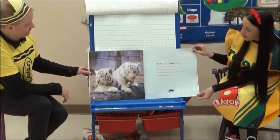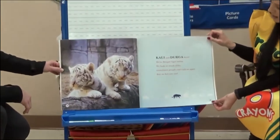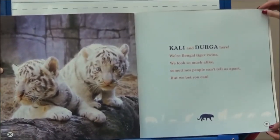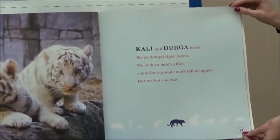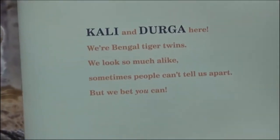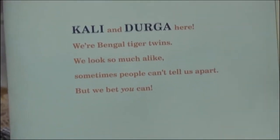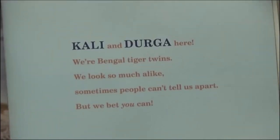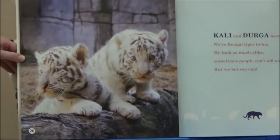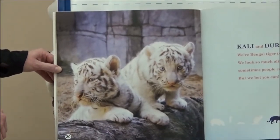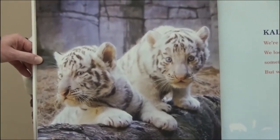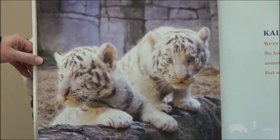Callie and Durga here — we're Bengal tiger twins. We look so much alike, our vocabulary word. Sometimes people can't tell us apart, but we bet you can. Remember, what does alike mean? The same. And as you can see, our Bengal twin tigers look just the same.